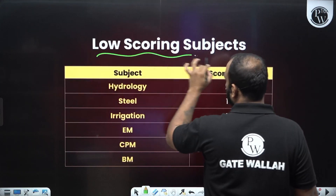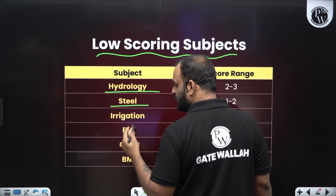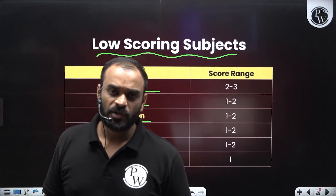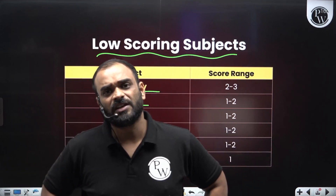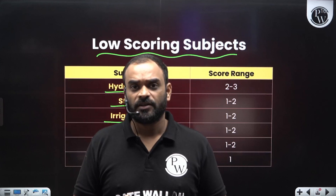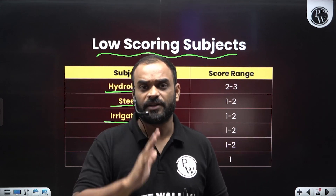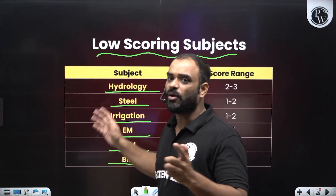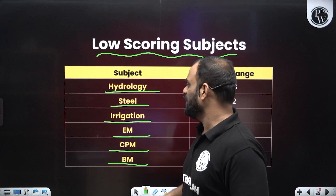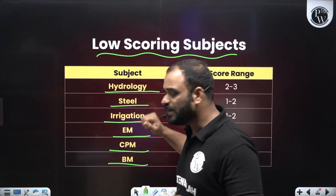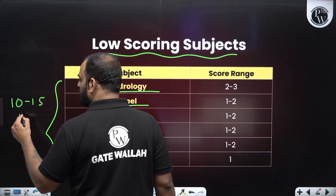The third category is low scoring subjects. We have: hydrology, steel structure, irrigation, engineering mechanics, CPM, and building material. The weightage of individual subjects is basically 1 to 2 marks. If you are not able to cover any of these subjects, try to find out what are the important topics asked from individual subjects in previous GATE papers and cover those. You can do this for one or two subjects, not all of them — but try to cover all subjects. The overall weightage of these subjects is 10 to 15 marks in the GATE examination.